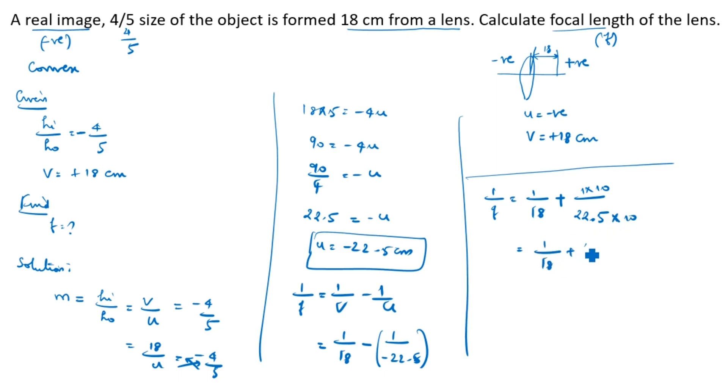1/18 plus 10 divided by 225. 1/f. So we do the LCM: 18, 225. 3, 6, 3s are 18, 75, 3, 2, 3s are 6, 25. So 3 times 3 times 2 times 25. 2 times 25 is 50. 3 times 3 is 9. 9 times 5 is 45, so 450.